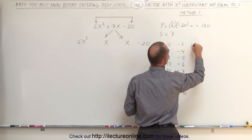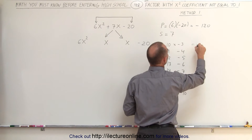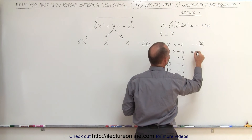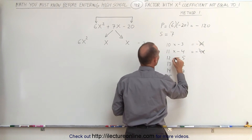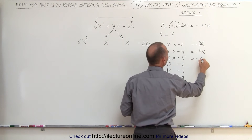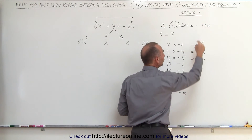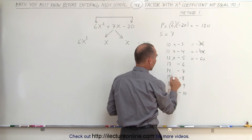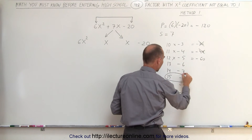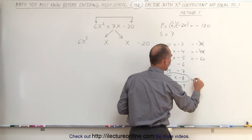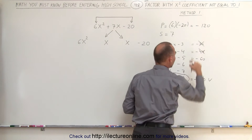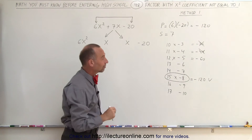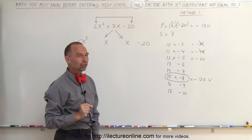When you multiply 10 and negative 3, you get negative 30 — not it. When you multiply 11 and negative 4, you get negative 44 — not it either. When you multiply 12 and negative 5, you get negative 60. Notice you're getting closer and closer to the value you're looking for. If you keep going, you'll realize that 15 times negative 8 gives you minus 120, which is the correct value. And when you add 15 and negative 8, that gives you positive 7. So that's the combination you're looking for.